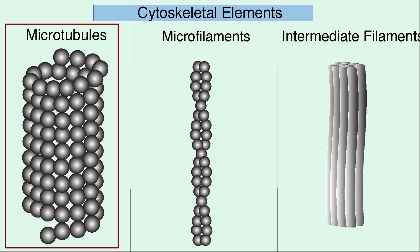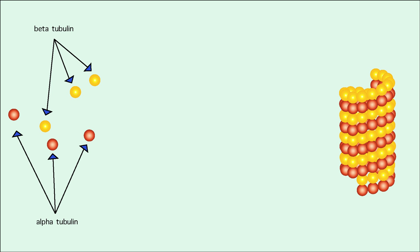So to sum up, microtubules are thick, rigid filaments involved in cellular transport and division. They are composed of alpha and beta tubulin monomers. Two monomers come together in a dimer.